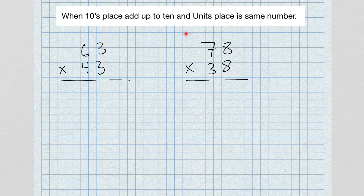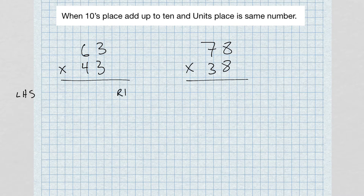So the tens digits add up to 10 and the units digit is the same number. Here's how this is going to work: we're going to split the problem into the left-hand side and the right-hand side. For the left-hand side, we're going to multiply the tens digits together and then add whatever number is in the units place.